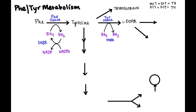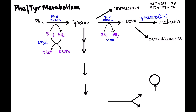DOPA can go in a couple of different ways: it can go into catecholamine synthesis, which we won't cover in detail here. It can also be converted to melanin through an enzyme called tyrosinase, which uses copper as a cofactor.